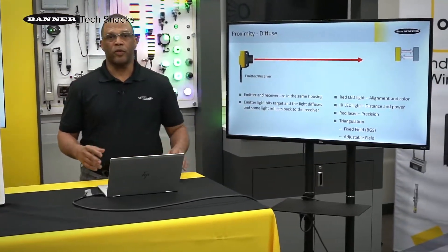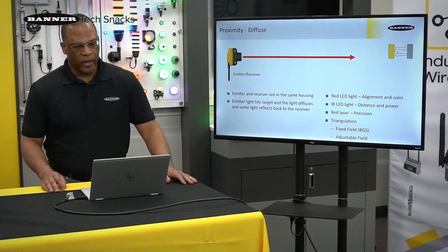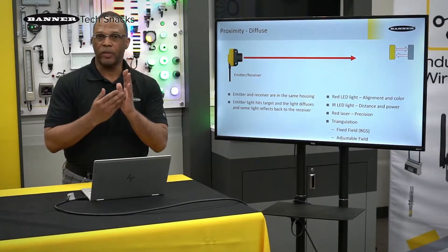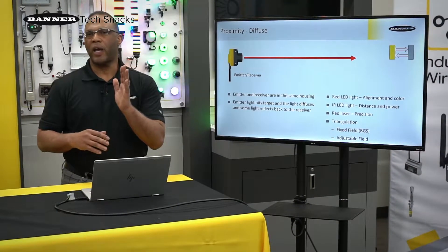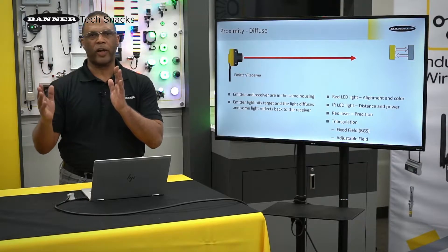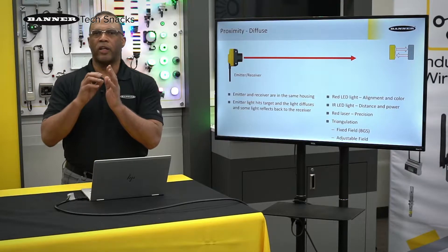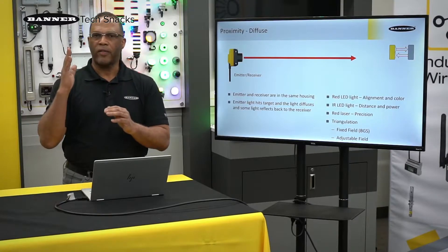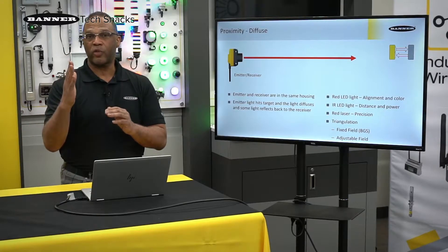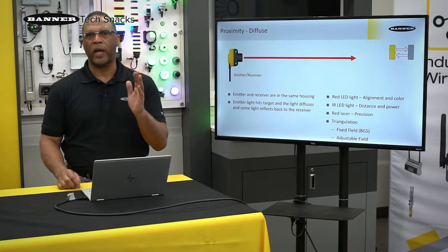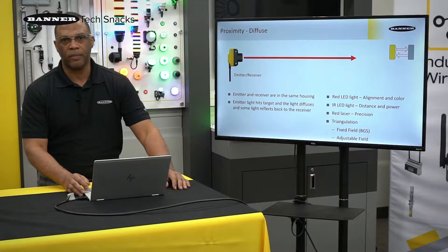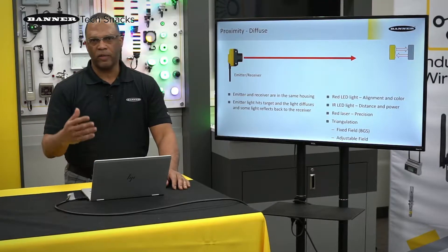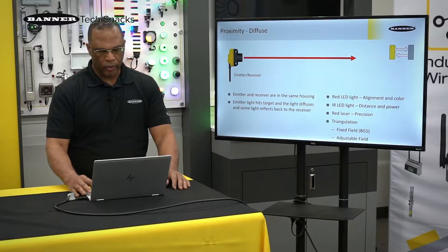We're going to start off with the diffuse mode. The diffuse mode sensor has the emitter and receiver in one housing. It doesn't need anything like a reflector or a receiver on the other side. Diffuse spreads light out, and the object it's trying to detect is what sends light back to the element. With these sensors, we use red LEDs, infrared, and laser.